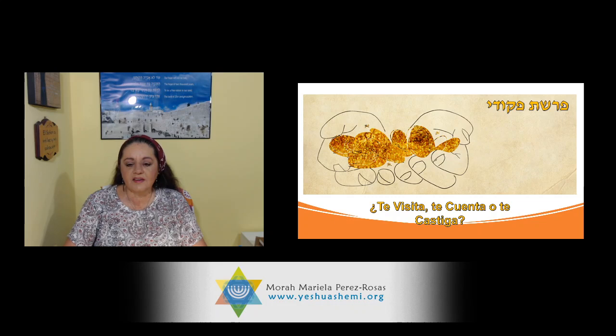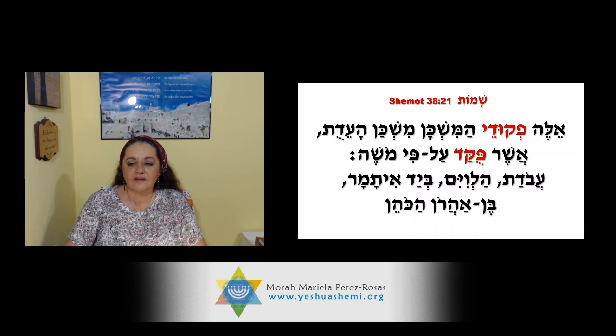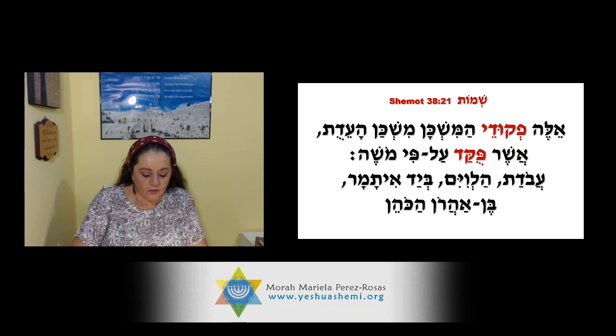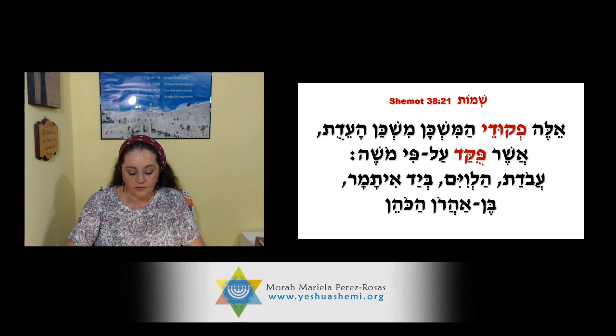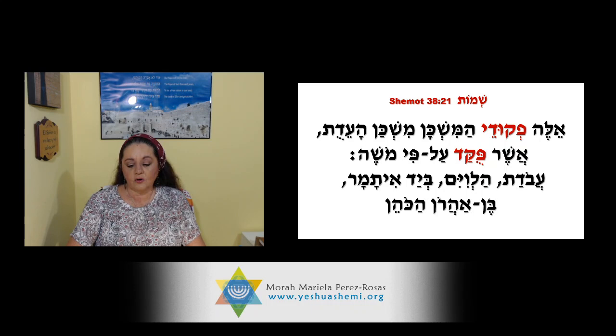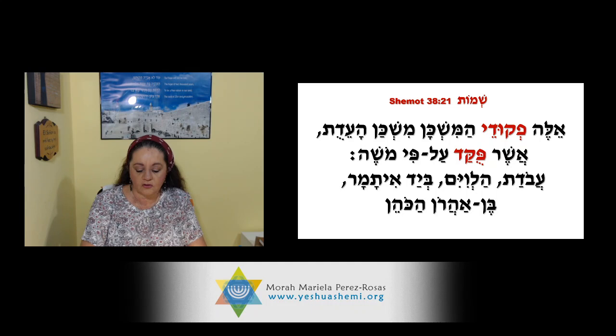Para PQD: te visita, te cuenta o te castiga. Shemot 38:21 es donde empieza la porción, donde dice: 'Este es el inventario del tabernáculo, el tabernáculo del pacto, que fue registrado conforme al mandato de Moisés, por mano de Itamar, hijo del sacerdote Aarón, para el servicio de los levitas.' Y comienza a hacer un recuento, vuelve a hablar de las vestiduras sacerdotales, y en el capítulo 40, el último de Shemot, ya el tabernáculo es levantado.